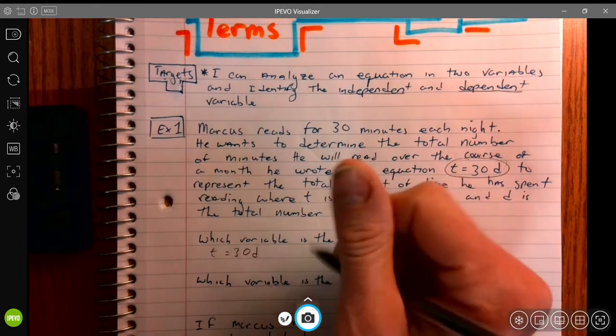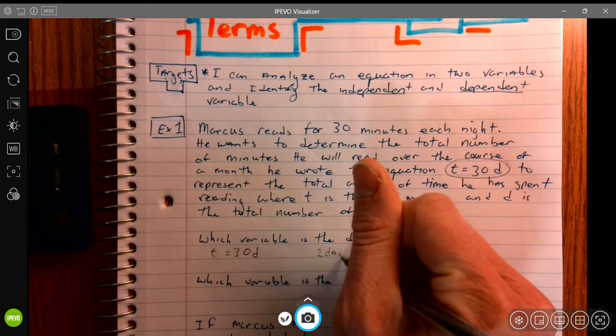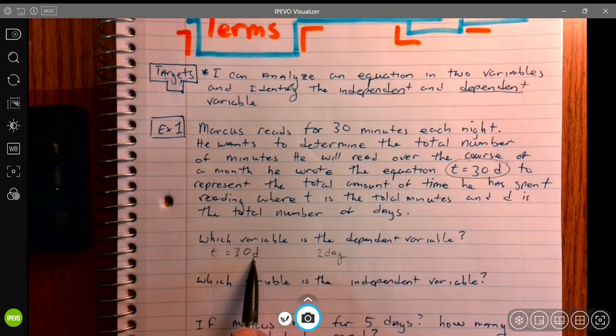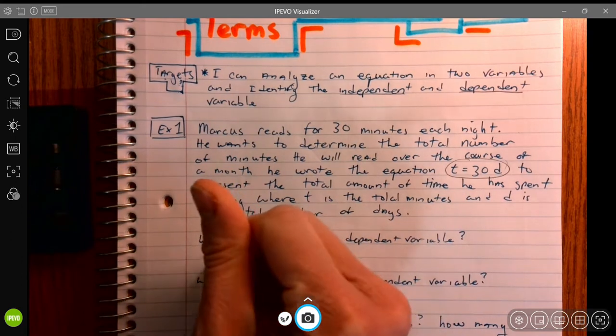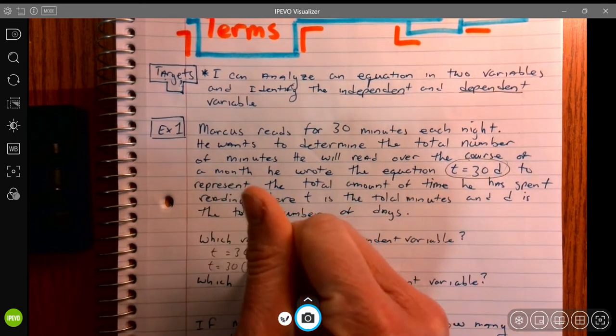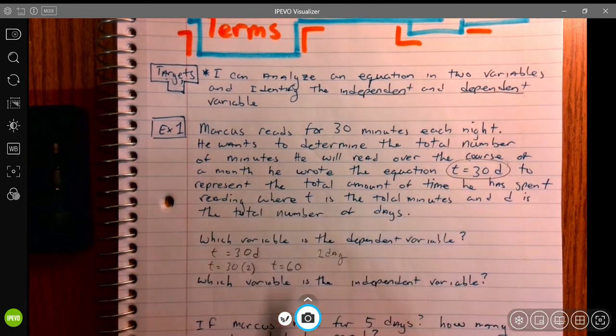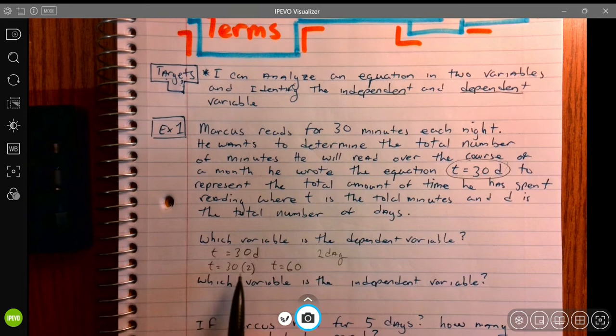As I just said, if Marcus reads for two days, we know that d stands for days. So I plug in 2 here, and we'd say that t is equal to 60. Now t depended on how many days we plugged in.